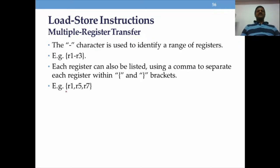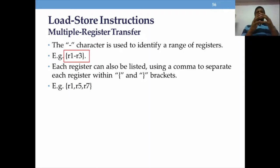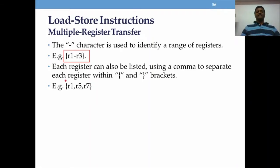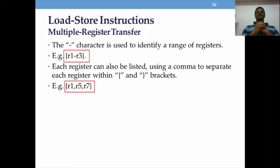Now how do we declare multiple registers? You declare them in curly brackets. You can define a range or use commas to separate them. For example, r1 hyphen r3 means you need to copy data to registers r1, r2, and r3. Alternatively, r1, r5, r7 with commas separates individual registers. The hyphen is used for a range and comma for individual registers.